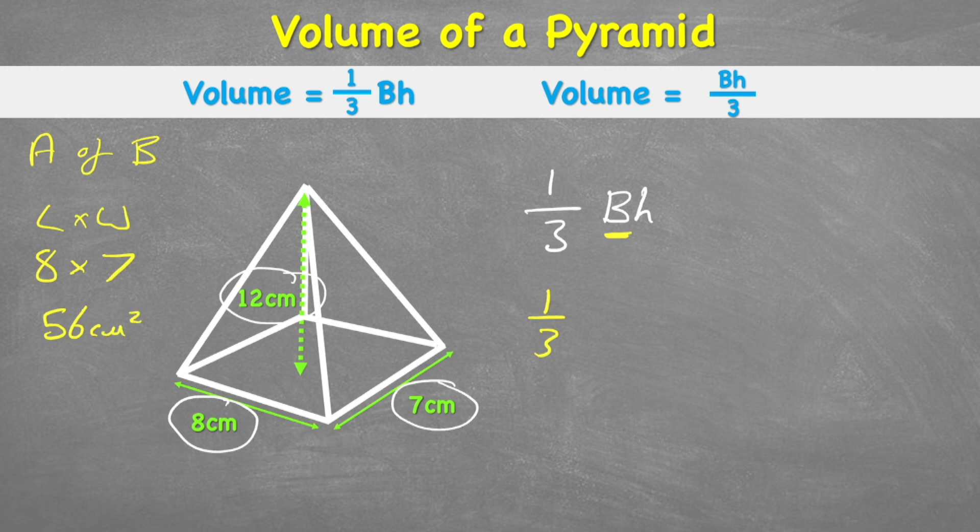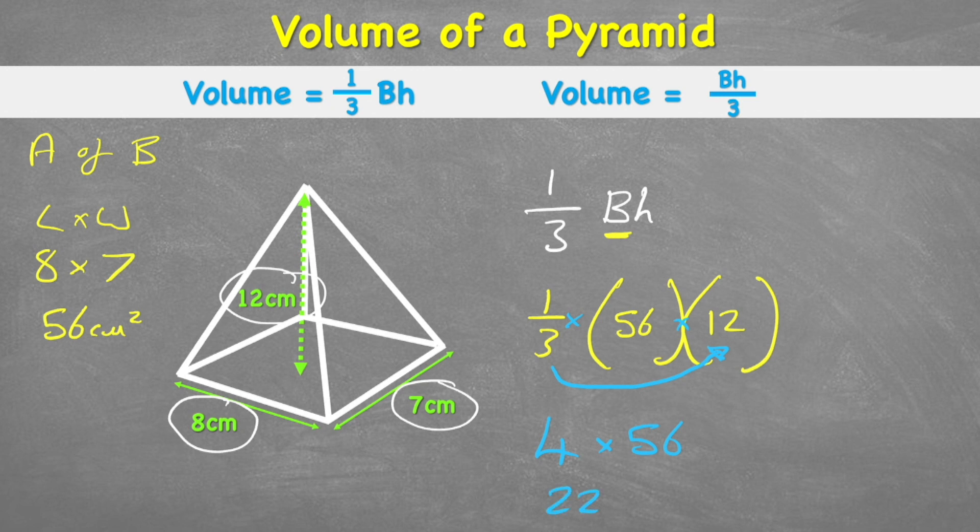So now I have one third times 56 times the height, which is 12. Now, because we're multiplying all of these together and multiplication is commutative, it doesn't matter which way around we do it. We can simply look for the easiest one. I know that one third times 12 is four, so I can start by putting that part. So I have four multiplied by 56, and four multiplied by 56 is 224. But this time I have centimeter cubes because I'm now measuring the 3D space. So our final answer is 224 centimeter cubed.